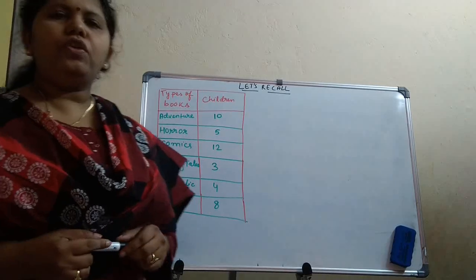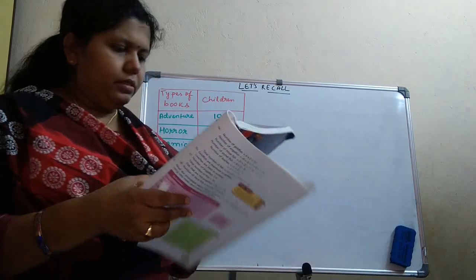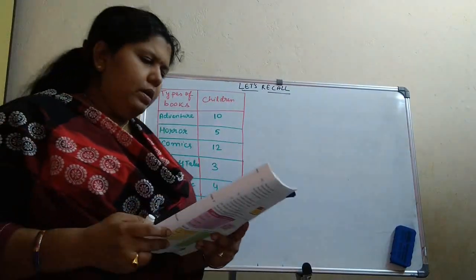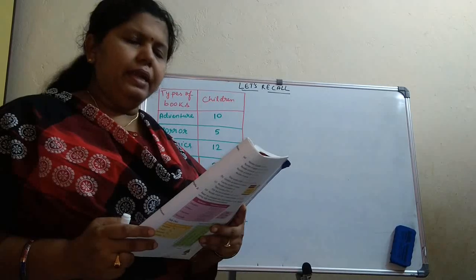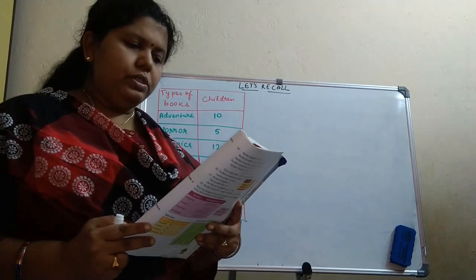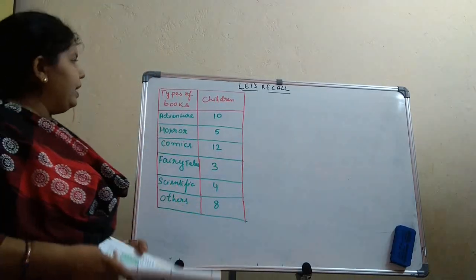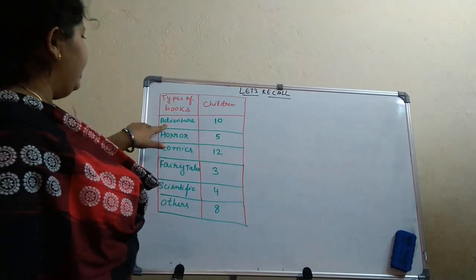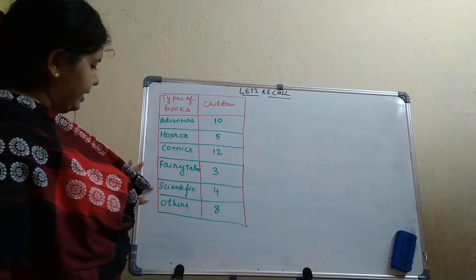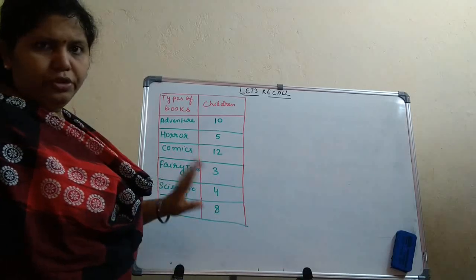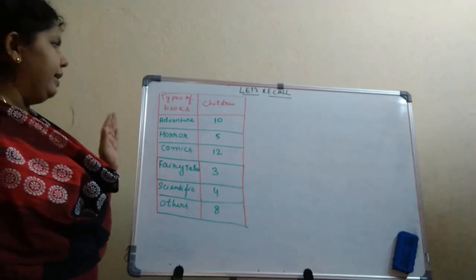Now let us do one question from Let's Recall. Look at page number 186 and you will find the question. Read the data about the favorite books of children in a class and represent it using pictograph and tally marks, then answer the questions that follow. So this is the data given in the book. We have types of books and number of children. The different types of books are: Adventure, Horror, Comics, Fairy Tales, Scientific, Others. We have to represent this data first through pictograph and then by tally marks.